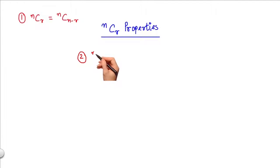The second property is given as NCR plus NC(R-1) equals N+1CR. Let's have a look at its proof.